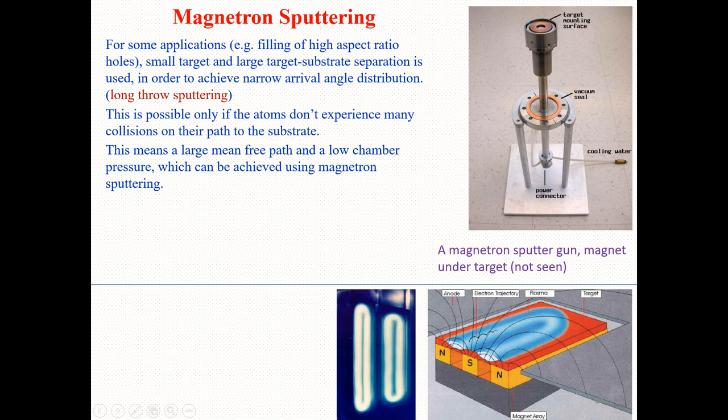When an atom is sputtered from the target and moves toward the surface for deposition, it has many collisions with particles on its way. We mentioned last lecture that it can have tens of collisions before reaching the substrate. In magnetron sputtering, such collisions are avoided. This is why we say long-throw sputtering is possible only if atoms don't experience many collisions on their path to the substrate, meaning a large mean free path and low chamber pressures are achieved.